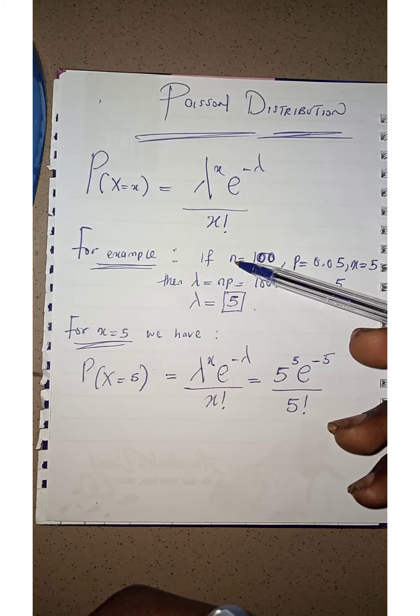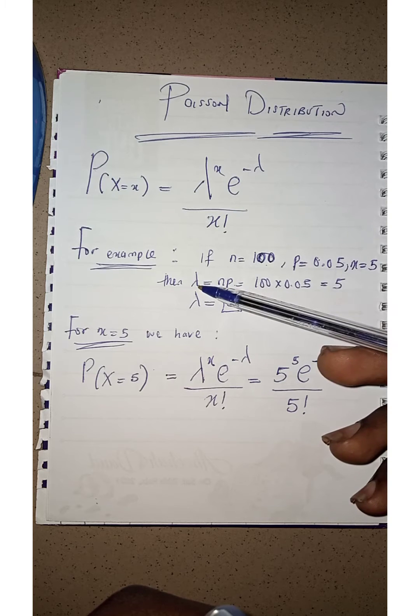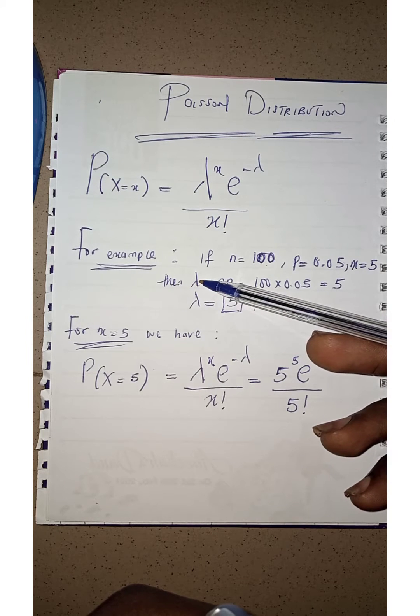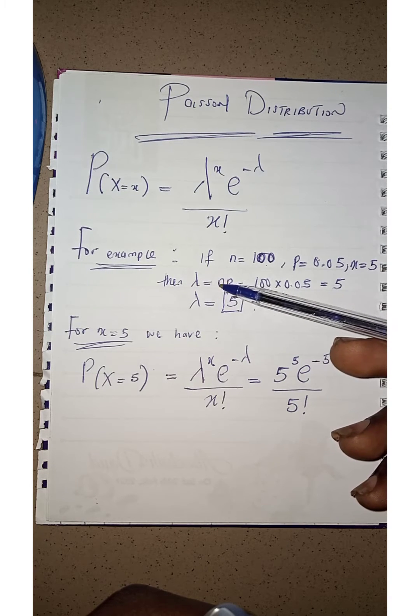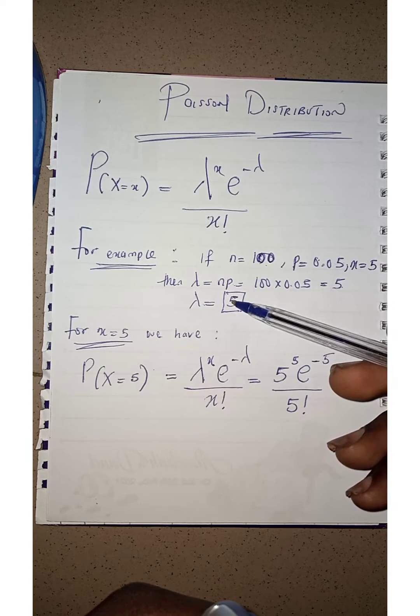So let's assume that we have a number of sample space to be 100, and the probability given in the particular question is 0.05. All I will just need to do is calculate the value for the lambda, which is the mean, and it is always given as np. By the time you multiply 100 and p together, you should have 5. So my mean for the Poisson distribution is 5.